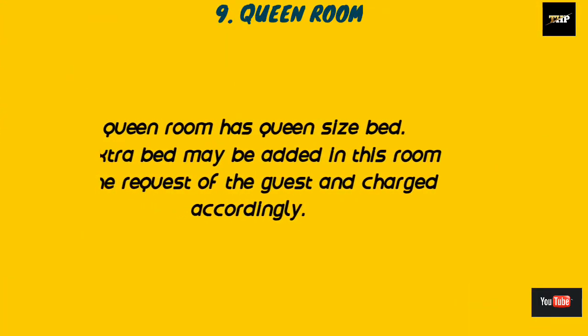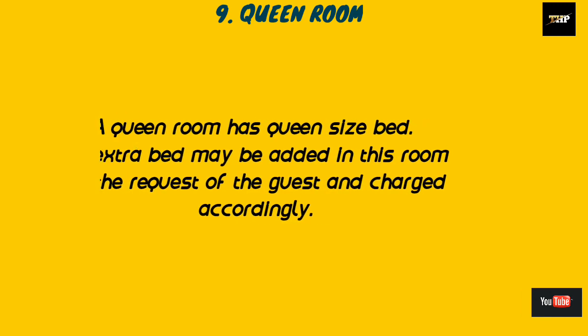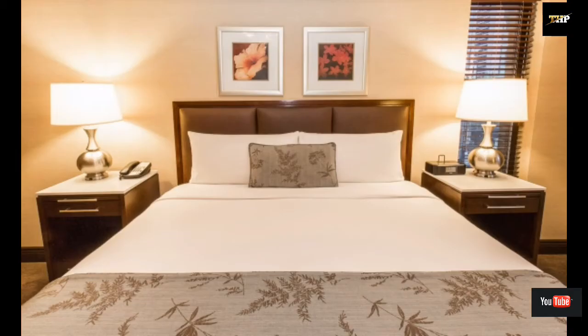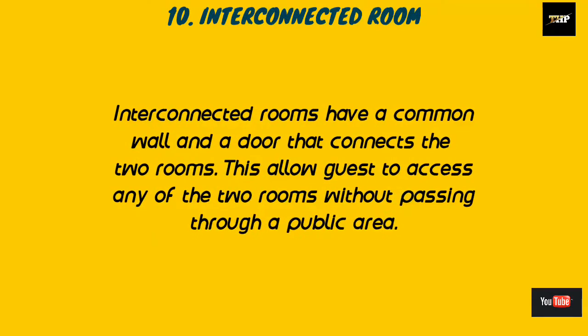The next one is the queen room. A queen room has a queen size bed. An extra bed may be added on the request of the guest and charged accordingly. The size of the queen bed is five feet by six feet, and it is smaller than the king size bed. Here are images of the queen bed.